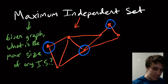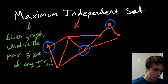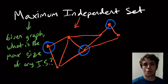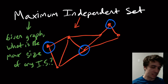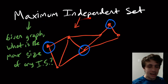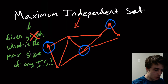In this case the maximum independent set size happened to be three — it may in fact be possible to get four, but I'm not exactly sure. It's a well-formed question. Now, we're not going to talk about maximum independent set for general graphs; instead, we're going to focus on trees.